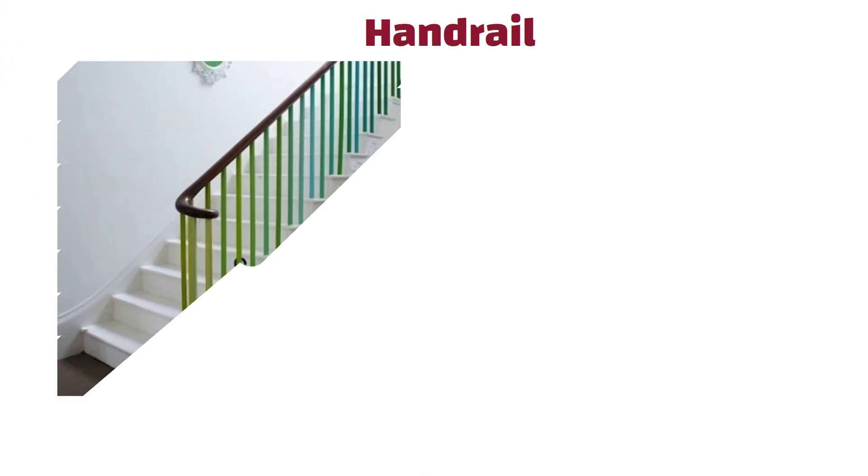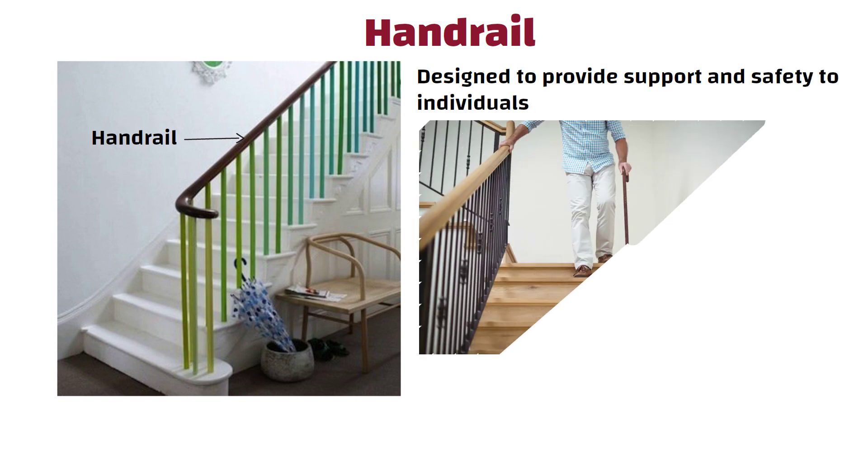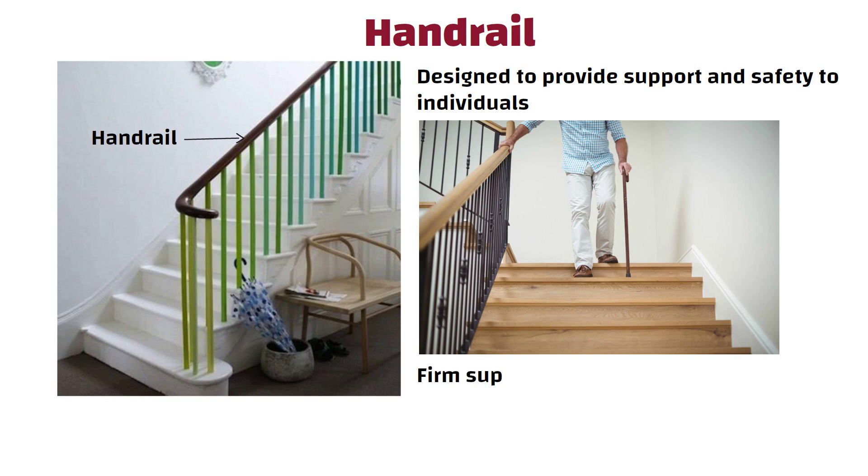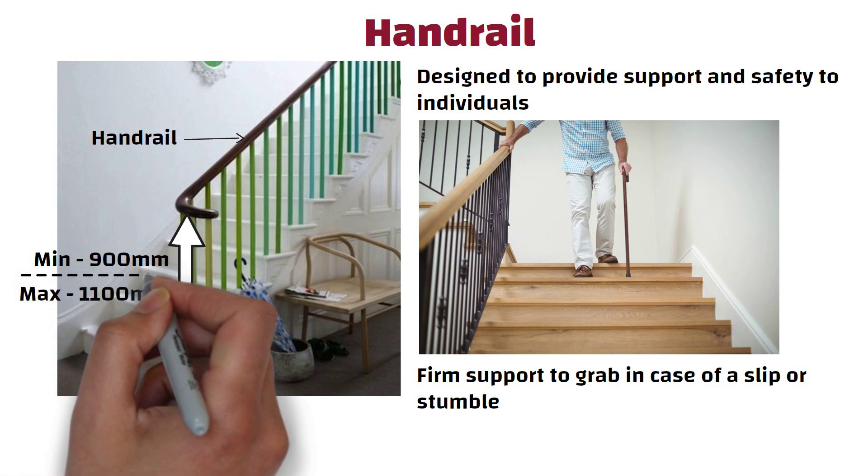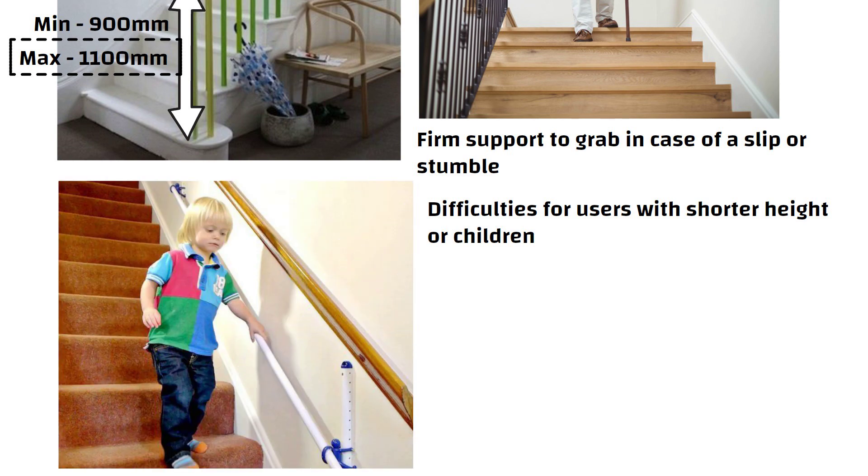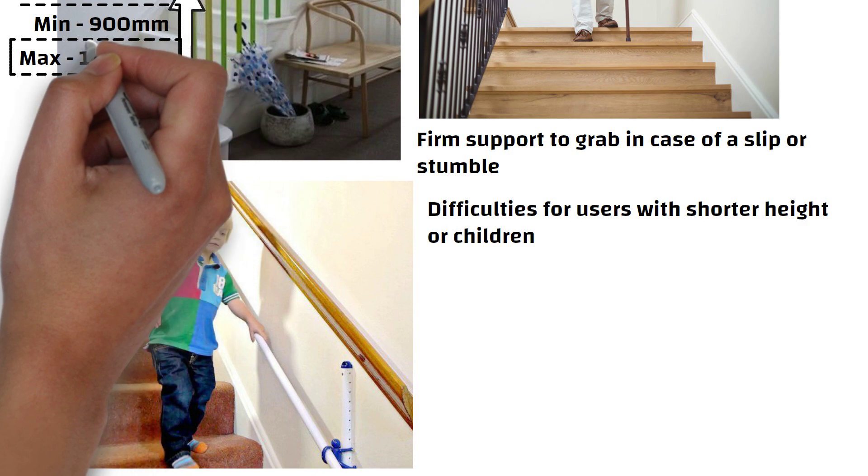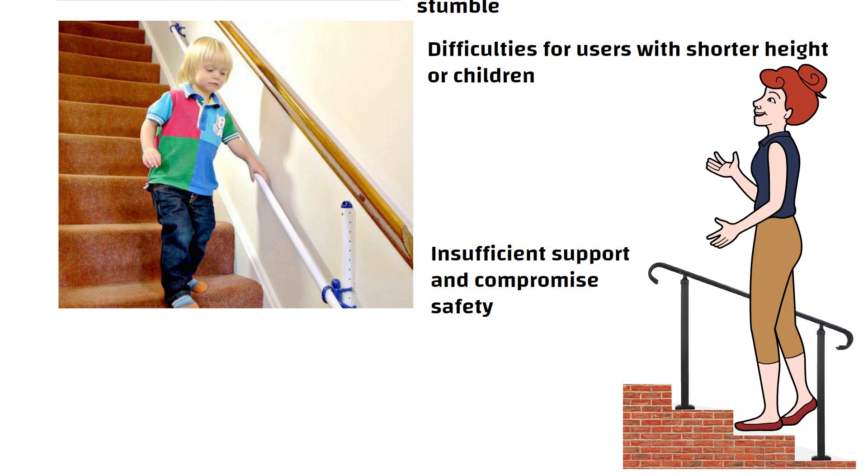3. Handrail. A handrail in a staircase is a horizontal or sloping rail that is designed to provide support and safety to individuals. It helps users maintain balance and offers a firm support to grab in case of slip or stumble. The minimum height of handrail in a staircase is 900 mm and the maximum height is 1100 mm. If the height of the handrail is more than the standard height, it might pose difficulties for users with shorter height or children to reach and grip it properly. Conversely, if the handrail height is lower than the standard, it could result in insufficient support and compromised safety, particularly for taller individuals.